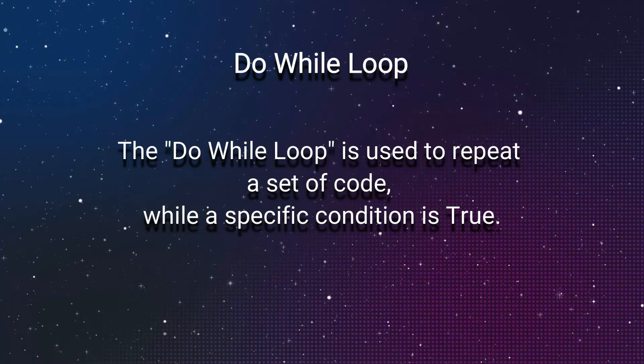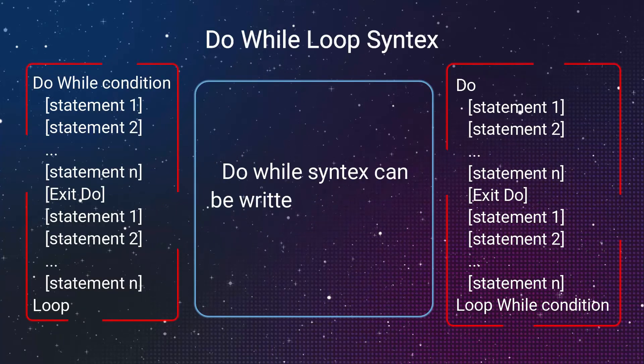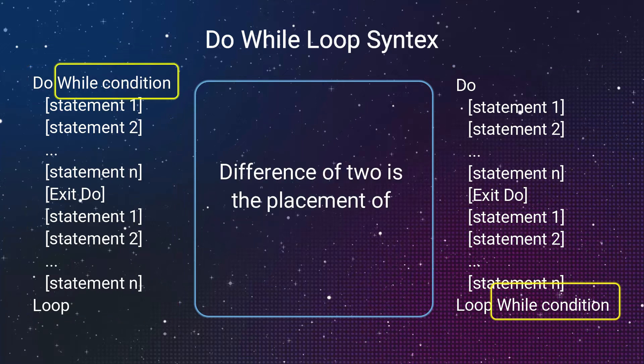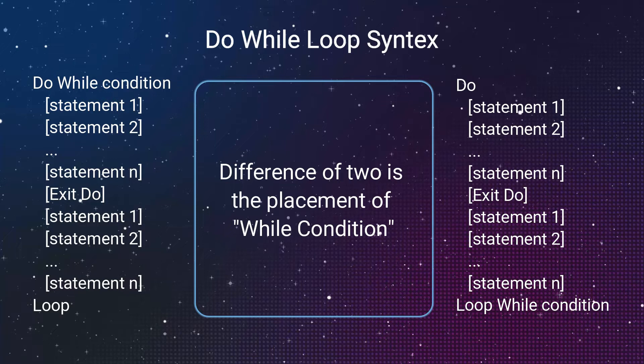The Do While loop is used to repeat a set of code while a specific condition is true. Do While syntax can be written in two ways as shown. Difference of two is the placement of while condition.